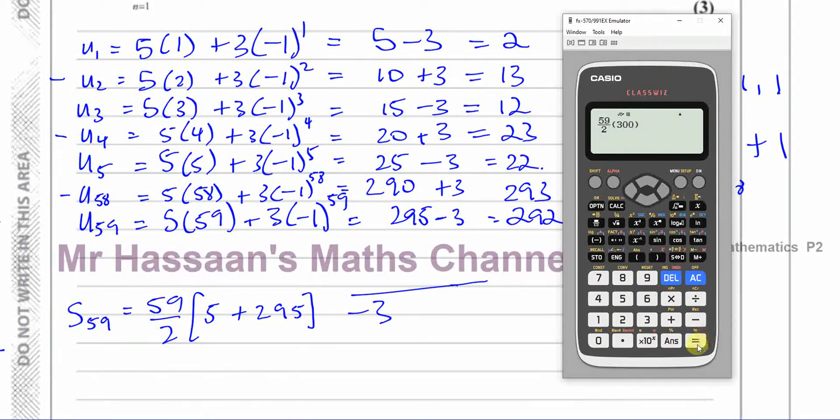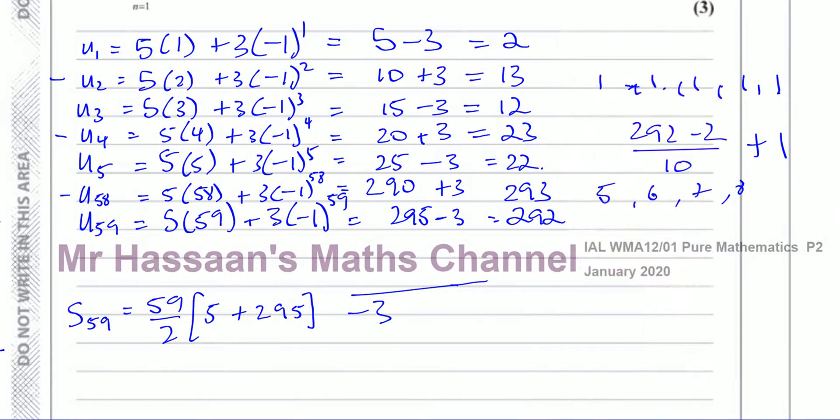It should be 8847 if we did, and then minus three of course, minus three, and that gives you 8847, exactly the same answer. It's a bit quicker actually.